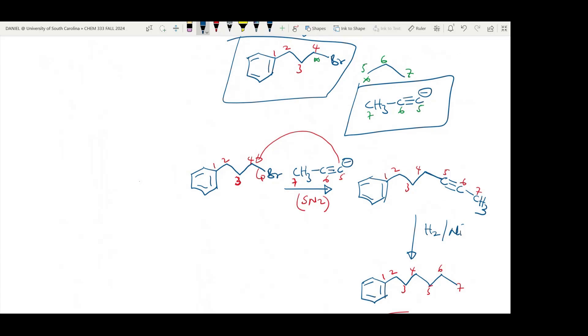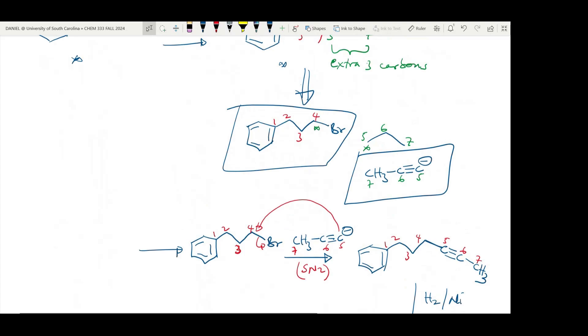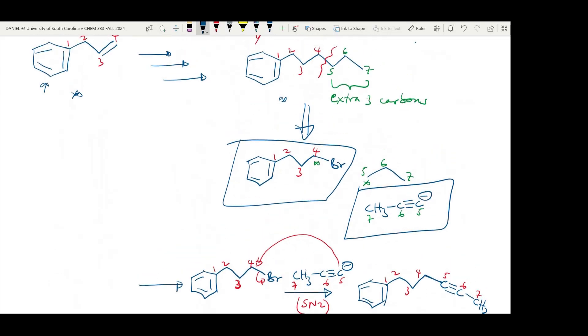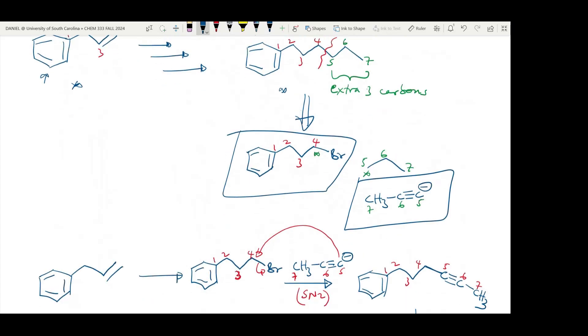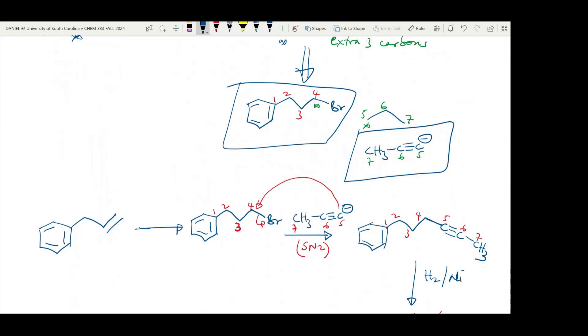So the next question to then ask will be: how can we make this alkyl halide considering the starting material we have? So I'm going to bring down the starting material here. A good question to ask will be: what reagents can we add across this double bond that will attach bromine to this less substituted carbon and hydrogen to this more substituted carbon? The reagent to make that happen will be hydrogen bromide, alkyl peroxide and light. So this is going to add bromine and hydrogen via anti-Markovnikov addition such that bromine will be attached at this less substituted carbon.